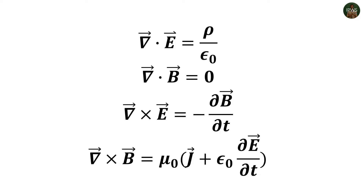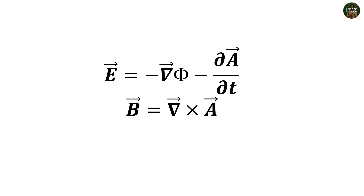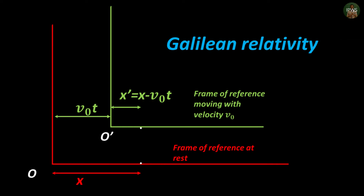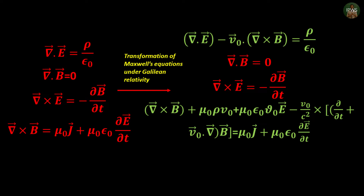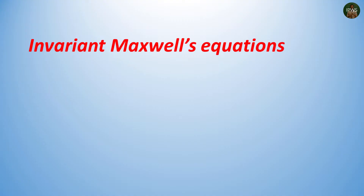We have our differential Maxwell's equations in SI form — two of them with source terms and two without. Fields are expressed in terms of scalar potential phi and vector potential A. As we have seen, Maxwell's equations are not invariant under Galilean coordinate transformation, but since they are a physical law, they must be independent of the reference frame. So the entire goal of this video will be searching for a transformation under which Maxwell's four equations remain invariant.